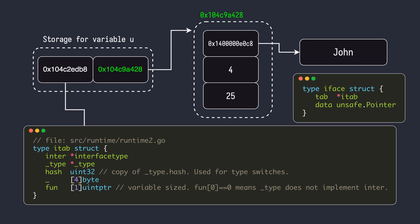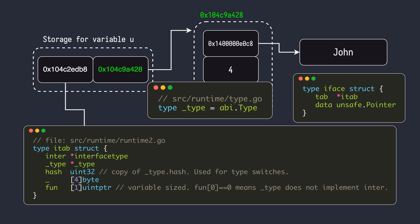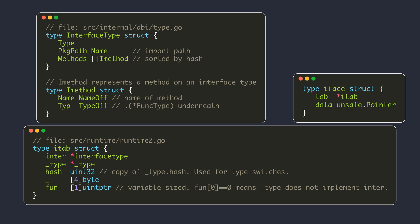The first field in the interface table structure is a pointer to the interface type struct. This is the representation of the type description structure for the interface type, similar to what we saw for the struct type earlier. The type struct we saw earlier is embedded within the interface type. The interface type also includes a list of its method elements. This type description structure for the interface type is also generated at compile time.